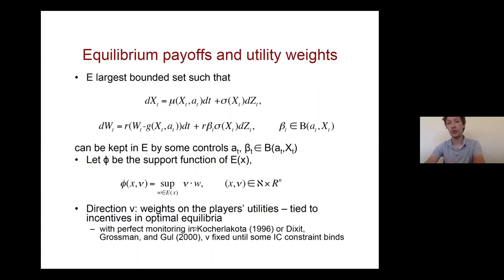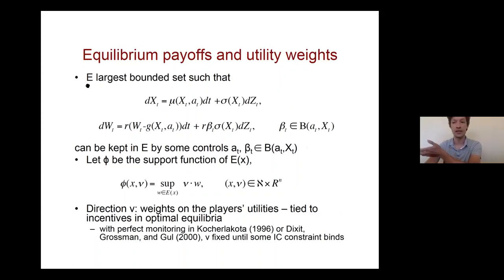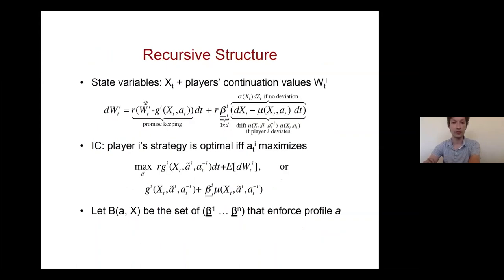The incentive constraint requires that each player maximizes the sum of flow payoff and the expectation of their future continuation value. This yields an incentive condition that specifies how different sensitivities of continuation values to signals can enforce different action profiles. With this recursive structure, we can ask what is the maximal set — the largest self-generating correspondence — that players can achieve in equilibrium, which is the largest bounded set whose states can be kept within it while respecting the laws of motion and incentive constraints.